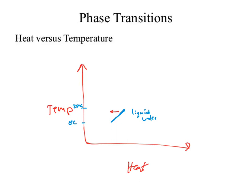Let's try the other direction. As I add heat, the temperature goes up — until I reach 100°C. At 100°C, does all the liquid instantly turn into gas? No. I'm still adding heat. If I'm still adding heat but the temperature stays constant, I get a flat line. What is happening during that flat line? The water is becoming gas — this is a phase change. That flat line is the phase change from liquid to gas.